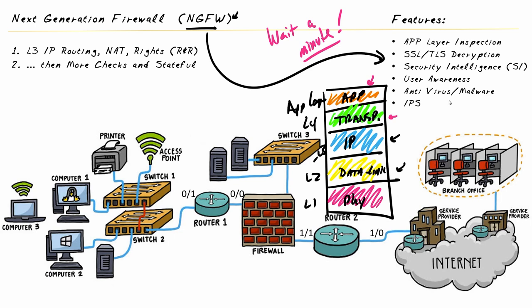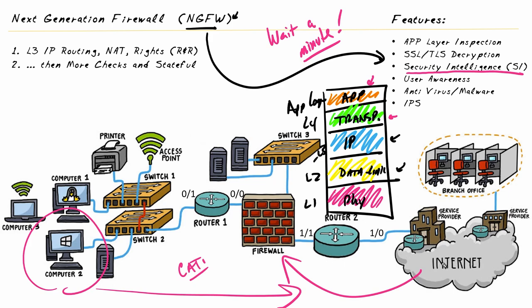Another feature is security intelligence fed from the cloud — including categories of websites. If a user tries to reach a site known to be malicious or contain malware, the firewall can block it: stopping the DNS request or preventing the TCP session from being established to that category of site. Also, if there's a new outbreak or problem on the internet, that information can be fed to the firewall in real time to act on it.